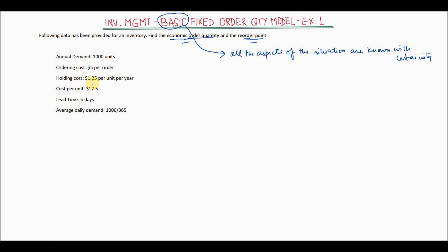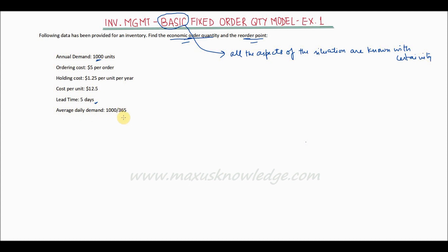Holding cost is $1.25 per unit per year, so if you order a lot of quantity and keep it in your inventory, you have to pay holding cost. The cost per unit — the purchase cost of this item — is $12.50. Lead time is five days, meaning the time taken after ordering for the item to reach your inventory is five days. Average daily demand is 1000 divided by 365.